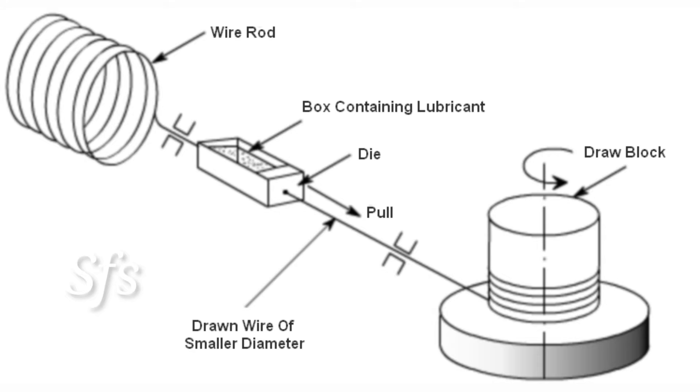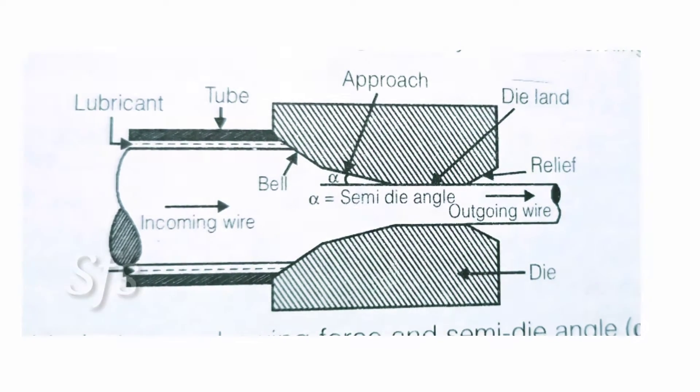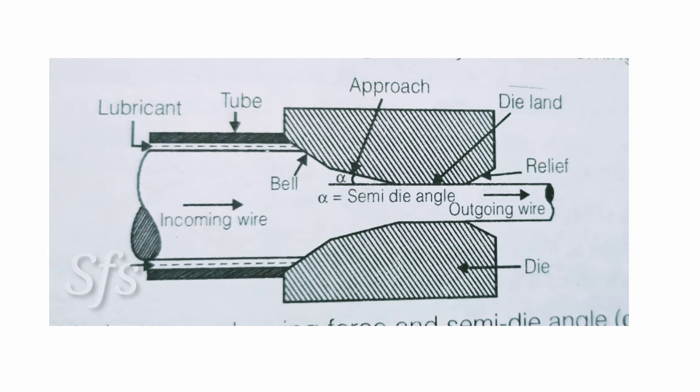Now let us understand the terms related to the die which is used in wire drawing. Here you can clearly see that the diameter of the wire rod at the entrance of the die is very large, and at the exit of the die the diameter of the wire reduces. This is the working of a die. Lubricant plays a very important role.